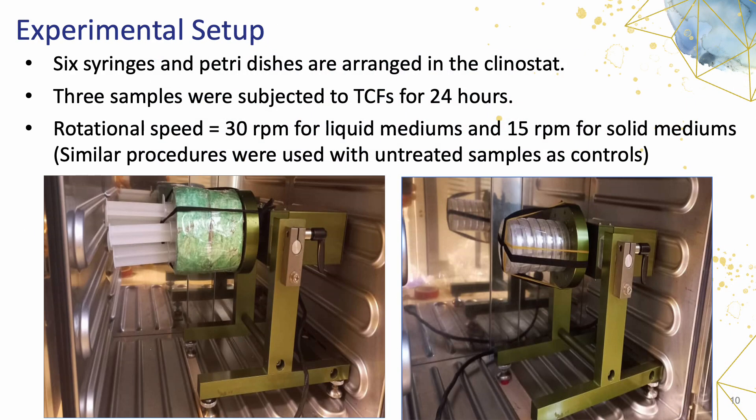In our experimental setup, as you can see in these photos, we arranged six syringes and petri dishes in the clinostat. Three of these samples were subjected to TCFs for a duration of 24 hours. We maintained a rotational speed of 30 RPM for liquid mediums and 15 RPM for solid mediums. Similar procedures were followed for untreated control samples to ensure consistency. The clinostat served as a reliable tool for replicating space experiments under real microgravity conditions.